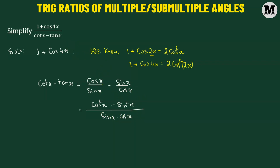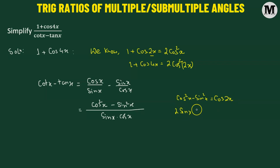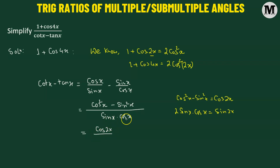There are two formulas we can use here. We know that cosine squared x minus sine squared x equals cosine of 2x, and 2 times sine of x times cosine of x equals sine 2x. So cosine squared x minus sine squared x is replaced with cosine of 2x. In the denominator, the factor 2 is missing, so sine x times cosine x is replaced with one-half sine of 2x.